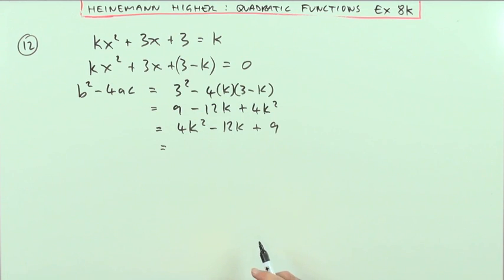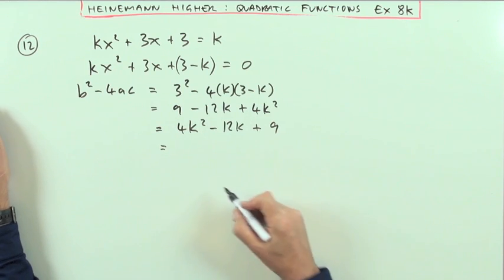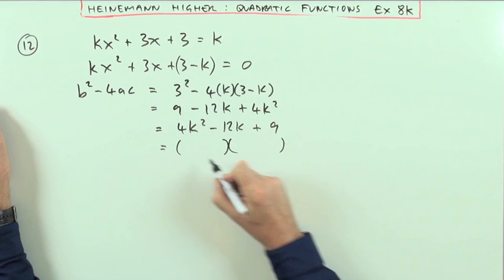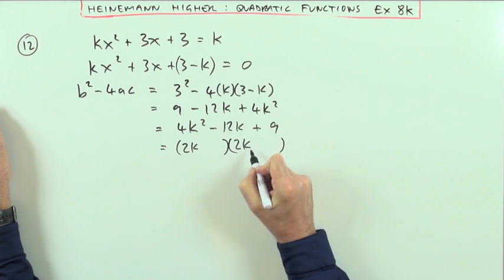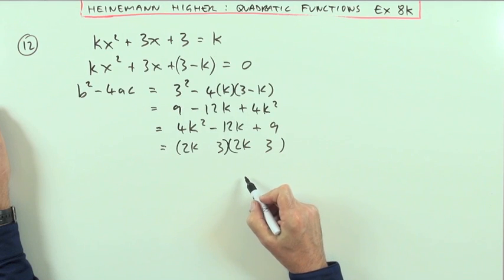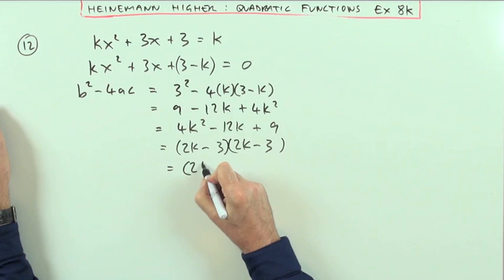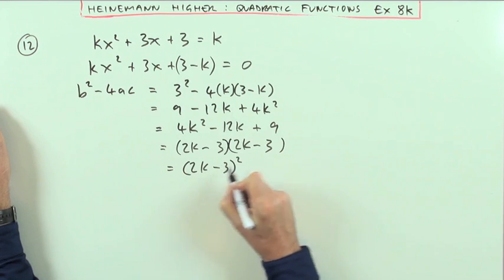Now the obvious thing to do here would be complete the square, unless of course it already is a square, and this one is. Because that's 2k times 2k, 3 times 3, and then negative times negative. So I've got 2k minus 3 squared.